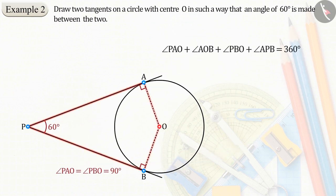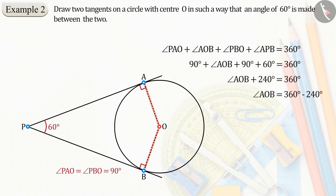Absolutely right! The sum of the four angles of a quadrilateral is 360 degrees. Therefore, the value of angle AOB will be 120 degrees. In this way we complete our rough diagram.